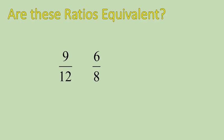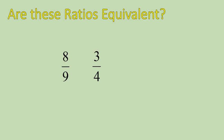Go ahead and use cross-multiplying to determine if these fractions are equivalent. You do 12 times 6, you get 72. 8 times 9 is also 72. So if you get the same number on both sides by doing cross-multiplying, then the ratios are equivalent. Let's take a look at this one — pause the recording and try it. Use cross-multiplying to determine if they are equivalent.